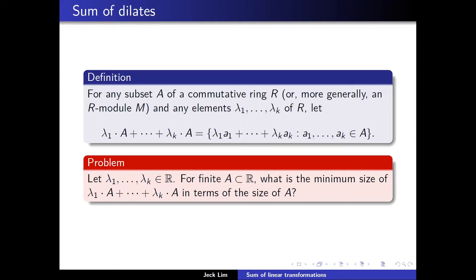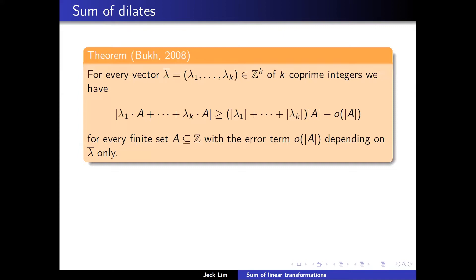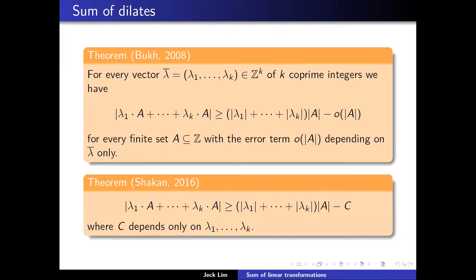The simplest example would be just A plus A, which we know to be at most twice |A| minus 1. The next non-trivial example is just A plus 2 times A. A result by Freĭman—Book solves this when all the lambdas are integers, getting that it's at least a constant times |A|, where the constant is the sum of the absolute values of the lambdas. Later Shakan improved the error term into just a constant.